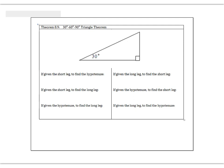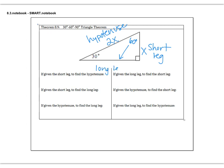So here's what we know. The smallest angle is opposite the shortest leg — let's call the short leg x. If the short leg is x, the hypotenuse, which is across from the 90-degree corner, has to be double the short leg, so we call that 2x. And then this side, across from the 60-degree angle, would be called the long leg, and that would be x times root 3. So if you're given the short leg, how do you find the hypotenuse? You multiply by 2. And if you're given the short leg, how do you find the long leg? You multiply by square root 3.